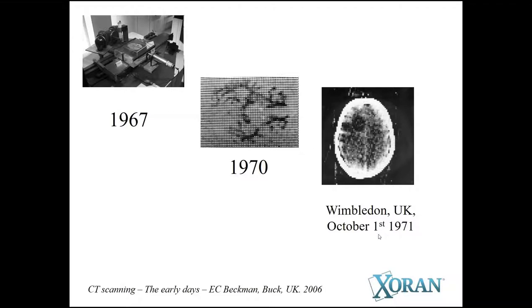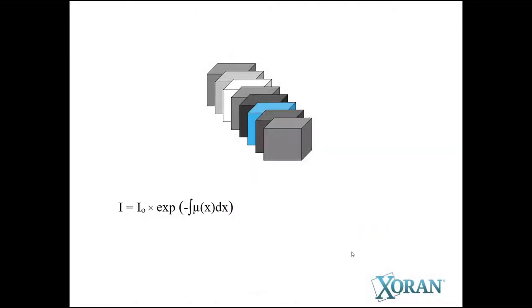The very first CT scan was performed by Dr. Hounsfield, who later received a Nobel Prize for it. It was done in Wimbledon, and it does look like a tennis ball right there in the middle of the brain. So how does it work? We take an x-ray — very much like what you know, it looks like a regular dental x-ray tube on one side of the machine.